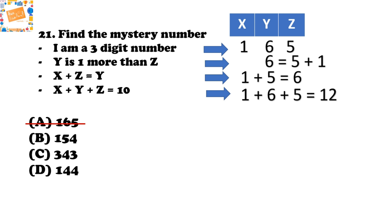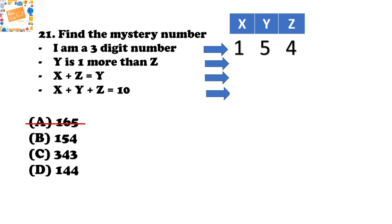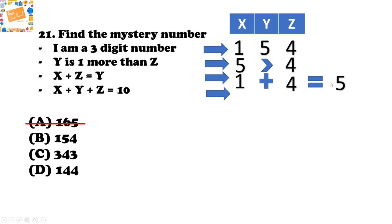For option B, 154: Y is 5 and Z is 4 — Y is one more than Z, condition satisfied. X plus Z equals 1 plus 4 equals 5, which equals Y — also satisfied. And X plus Y plus Z equals 1 plus 5 plus 4 equals 10 — all conditions are satisfied. Therefore, B is the correct answer.